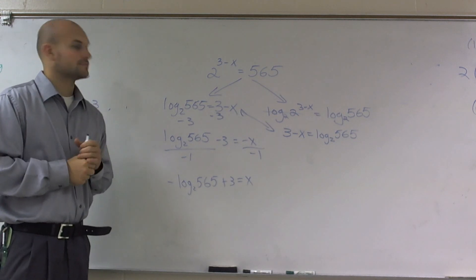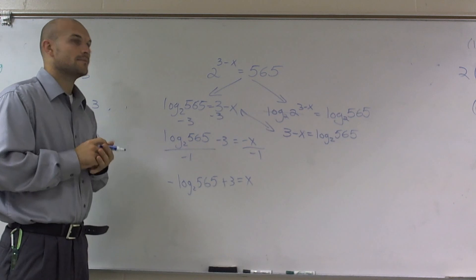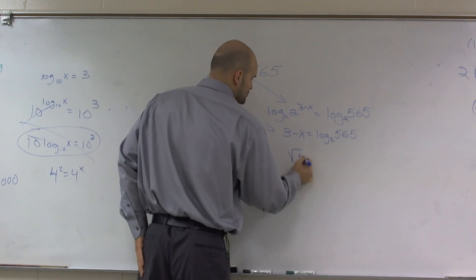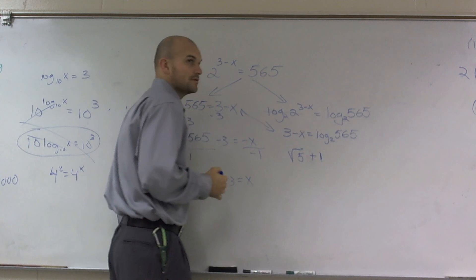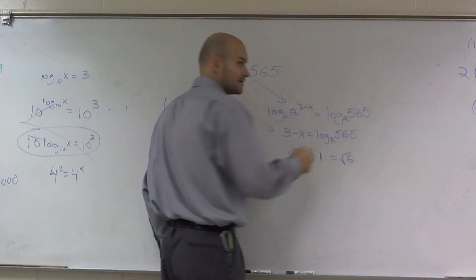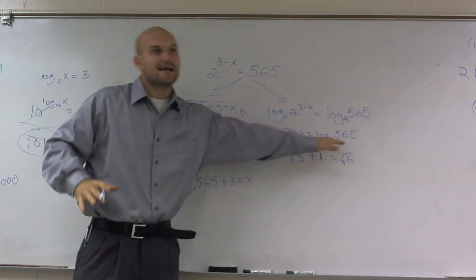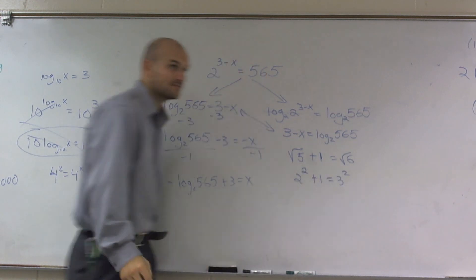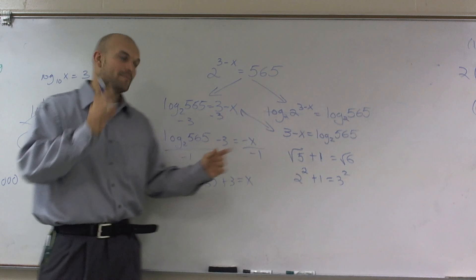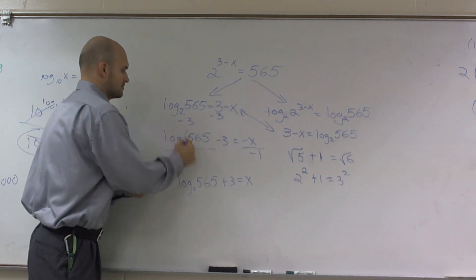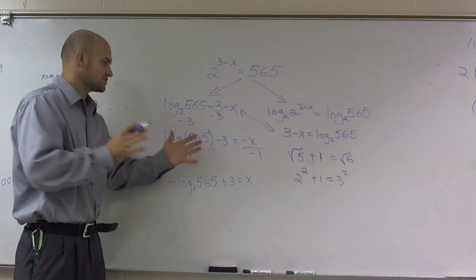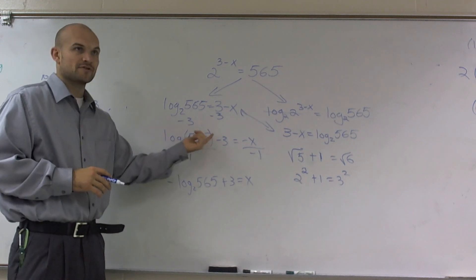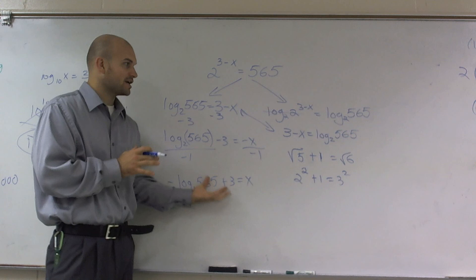Student asks: the plus 3, you don't actually add it to the 565, like as a difference? Exactly, that's a very good point. If I had square root of 5 plus 1, would you say that's the square root of 6? Same thing — 2 squared plus 1 is not equal to 3 squared. You don't add inside of functions. Remember, a logarithm is a function. You're not going to add or subtract inside that function, because log base 2 of 565 means 2 raised to what number gives you 565.